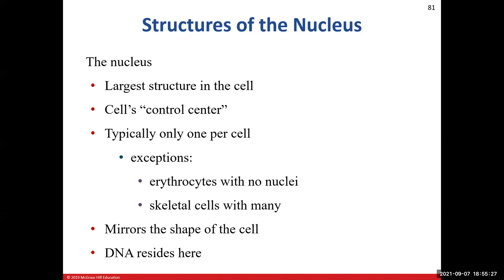Now we return to discussing the cell's three components — cytoplasm, plasma membrane, and nucleus. The nucleus is the easiest to identify under a microscope — it's the largest structure inside the cell. We call it the control center because it houses the cell's most important material: DNA, our genetic makeup. Pretty much all cells in the body have a nucleus.